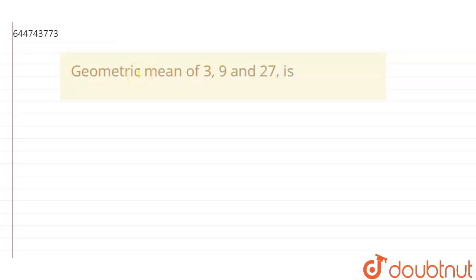Hello friends, so today our question is geometric mean of 3, 3, 9 and 27. So we are given three numbers and we have to find the geometric mean of these three numbers. So three numbers are 3, 9 and 27.